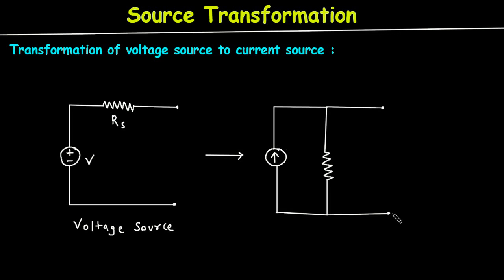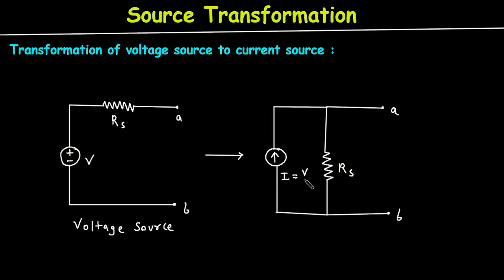This is terminal A and this is terminal B, and similarly on the equivalent circuit. Next, we have to find the value of this current source. The resistance value will remain the same, that is Rs. We can find the value of the current source by using Ohm's law: I is equal to V divided by Rs. This will be the value of the current source, and both circuits are equivalent.